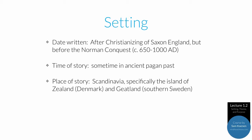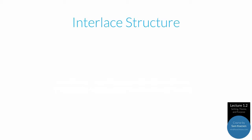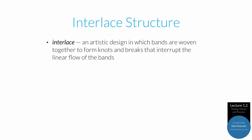Before moving on to the poem itself, we need to discuss one of the most important aspects of Anglo-Saxon poetry: something called interlace structure. Interlace is a technical term used to describe Anglo-Saxon artistic designs of the 7th and 8th centuries, in which thin bands would be woven together to form knots or breaks that interrupt the linear flow of the bands. The famous Celtic knot designs are the best known contemporary examples of interlaced structure.